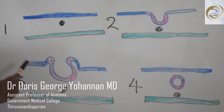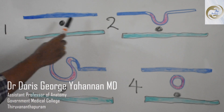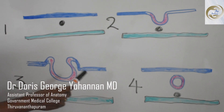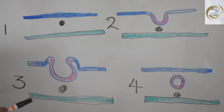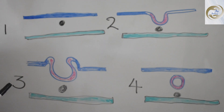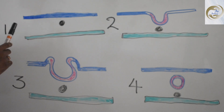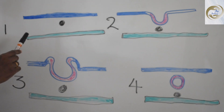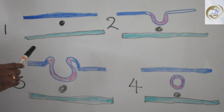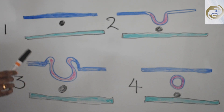What is shown here on this board are the four stages of development of the nervous system — early development of the nervous system. This process is called neurulation, and it is occurring in the fourth week of intrauterine life.